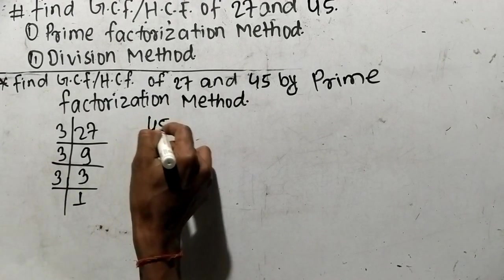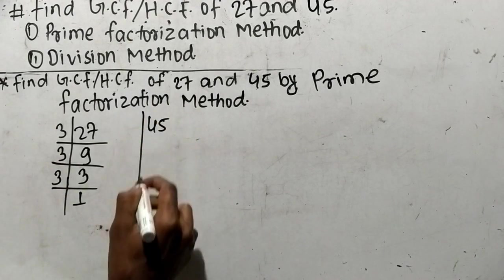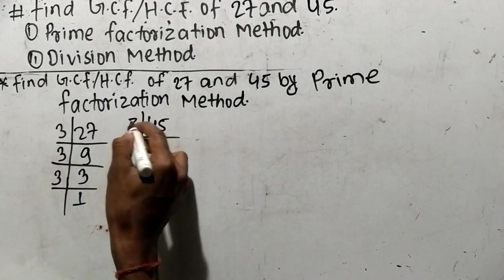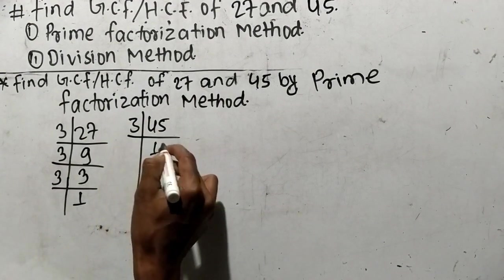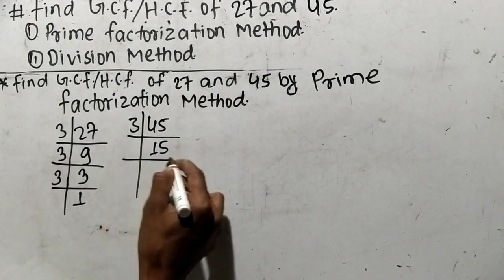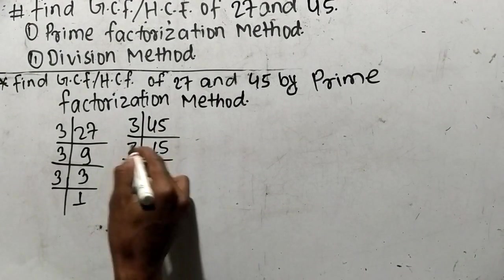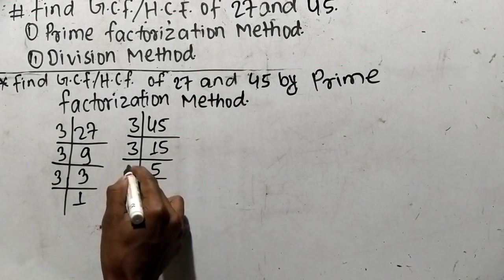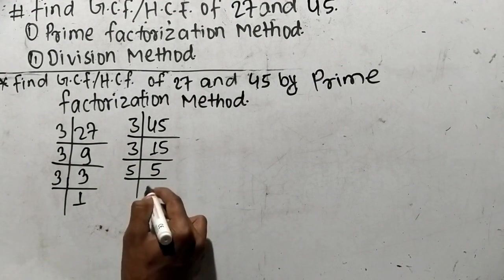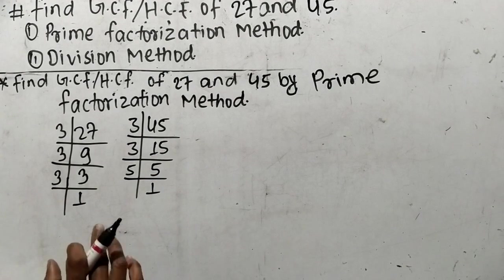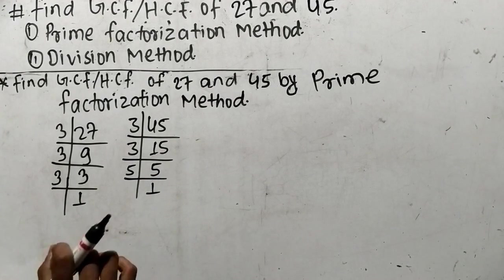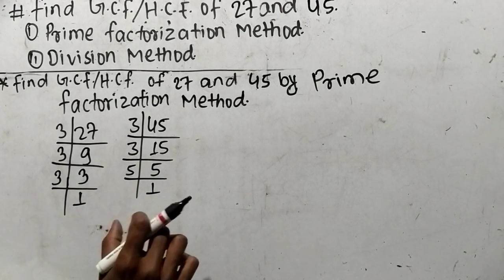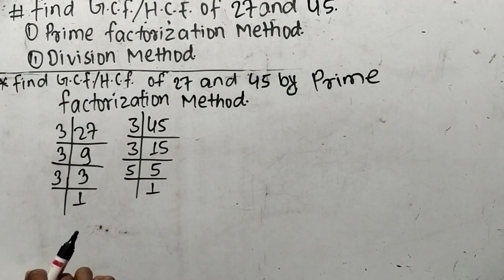In the same way, we can find out the prime factors of 45. It is 3 times 15 means 45, like 3 times 5 means 15, and 5 times 1 means 5. So as you can see here, we have found out the prime factors of 27 and 45.